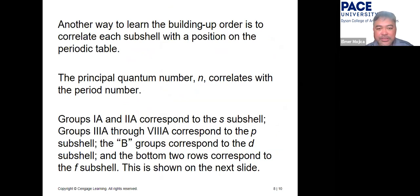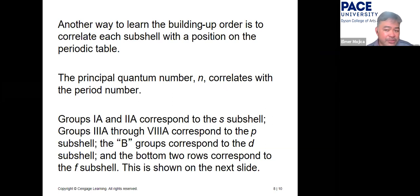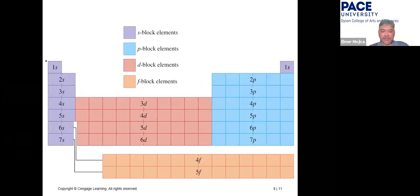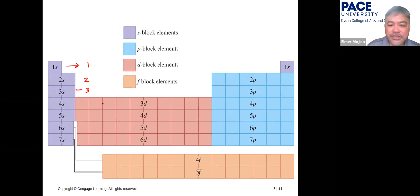Another approach is to correlate the subshell with the position on the periodic table, which will be provided in quizzes and exams. The first two groups are s-block, the last six groups are p-block, then the d-block and f-block. Count across the periods: the first is one, second is two, third is three.